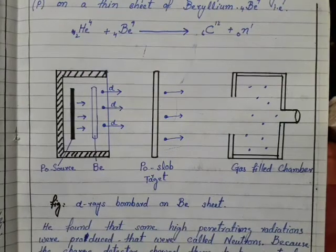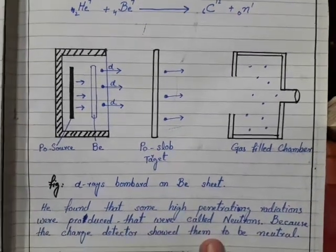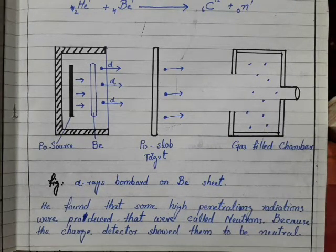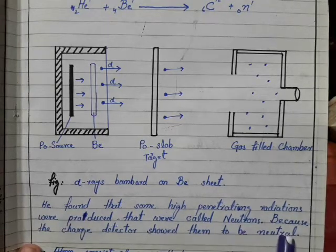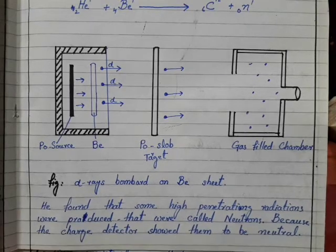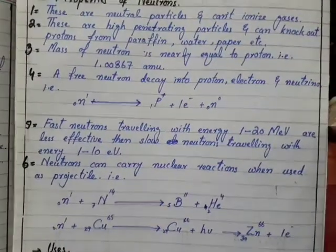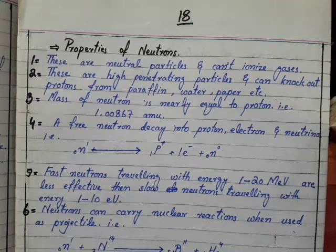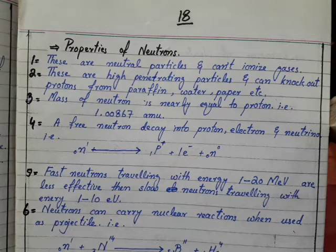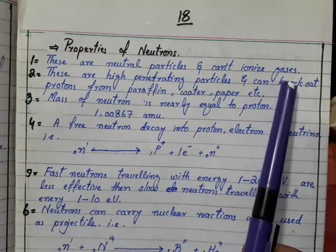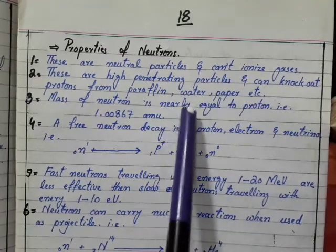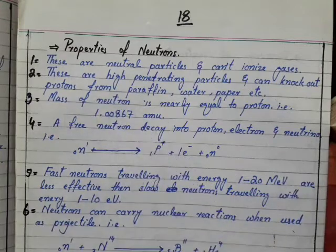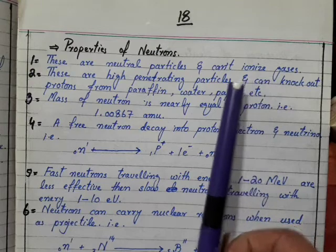This is why he claimed that in the atom nucleus there are protons plus neutron particles which are called neutrons which are neutral. He found that some high penetrating radiations were produced that were called neutrons because charge detectors showed them to be neutral. Now let's see the properties of neutrons.